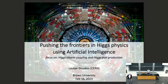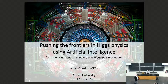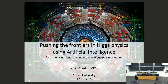All right, so I think it's time to start. We're very happy to have Lukas Gruskos today. He got his PhD from University of Athens, then had a postdoc at UCSB Santa Barbara on the West Coast. Then he crossed the Atlantic again, went to CERN first as a fellow, and then was hired as a research assistant, which is a long-duration position. Through his career, he was very interested in developing machine learning and artificial intelligence applications for particle physics, and today he's going to talk about how they work in Higgs physics.